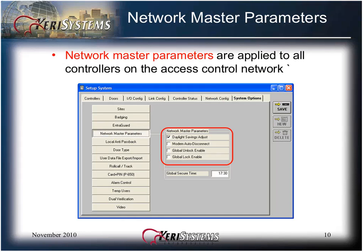Network master parameters are applied to all the controllers on the access control network. The Daylight Savings Adjust is on by default. It allows automatic daylight savings time adjustments at controllers per U.S. standards. Turn this option off if the controller is installed in a geographic location that does not observe daylight savings time.